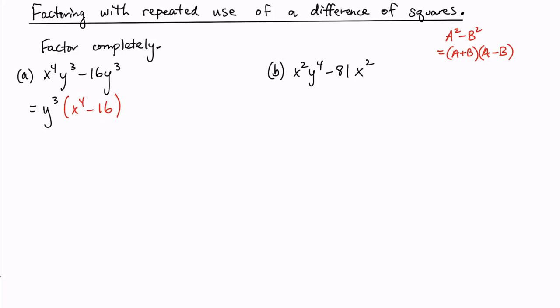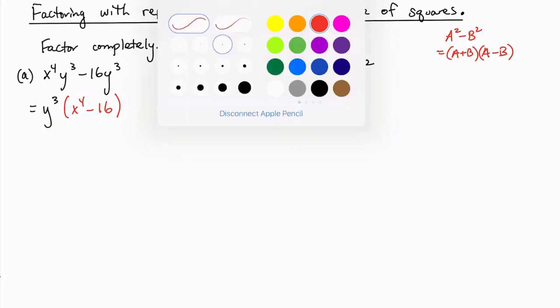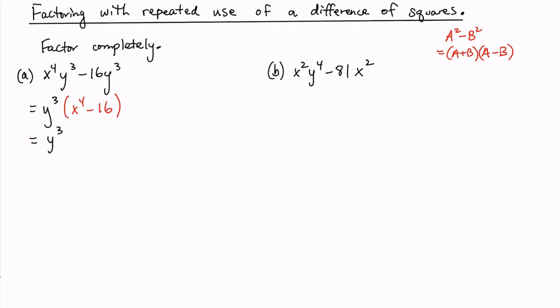But that is a difference of squares. In fact, that is now equal to y to the third times x squared plus 4 and then x squared minus 4.